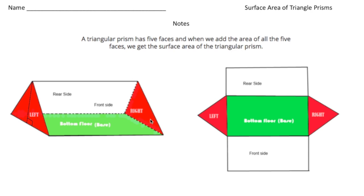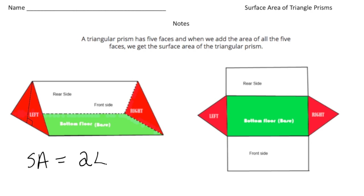Here's an example on the first page. A net consists of two triangles and then three rectangles. So what we have to do is find the area of the triangles, then find the area of the rectangles, and then add them together. So the surface area is going to equal the area of the two triangles plus the three rectangles.